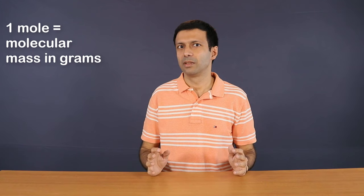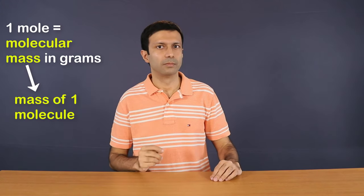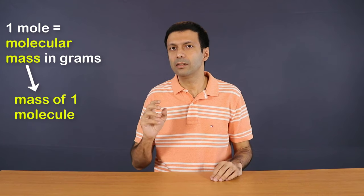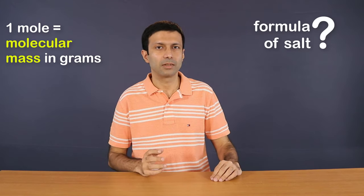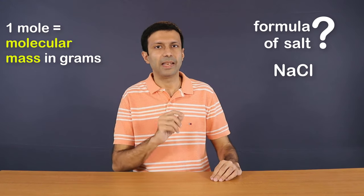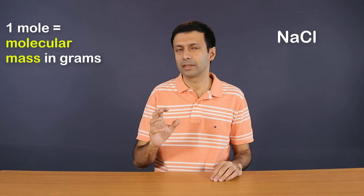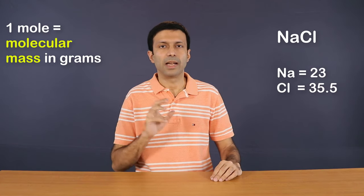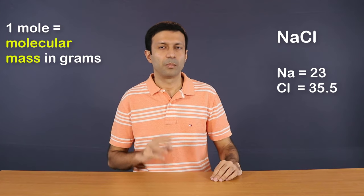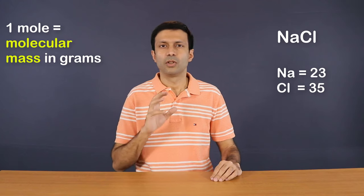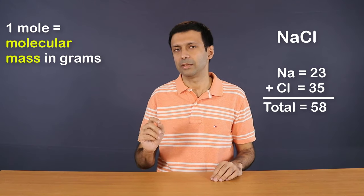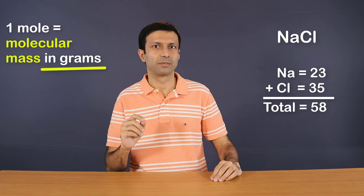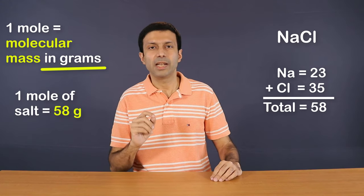Let's break down this definition. Molecular mass is the mass of 1 molecule, and the substance here is salt. To calculate the molecular mass, we need the molecular formula. The molecular formula of salt is NaCl. The atomic mass of sodium is 23 and chlorine is 35.5, but we'll approximate chlorine as 35. So the total molecular mass of salt is 58. This is the relative molecular mass. Taking the molecular mass in grams, 1 mole of salt is 58 grams.